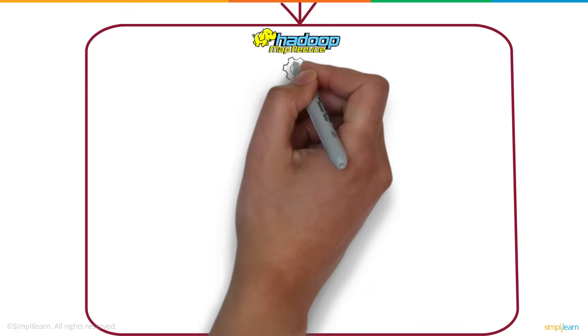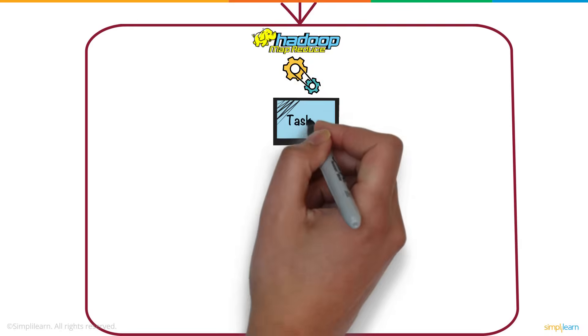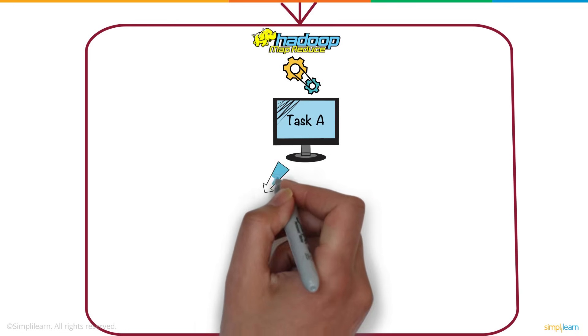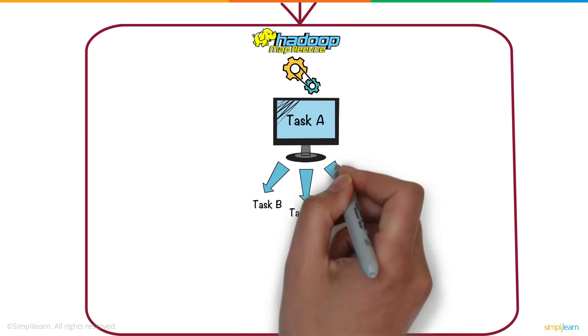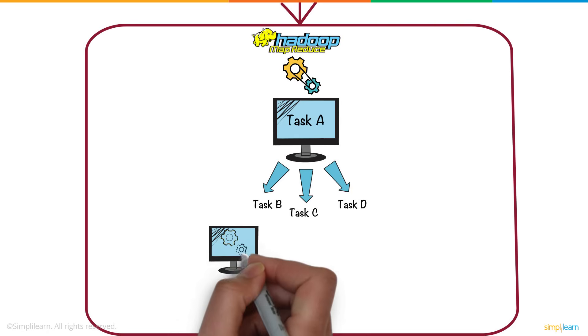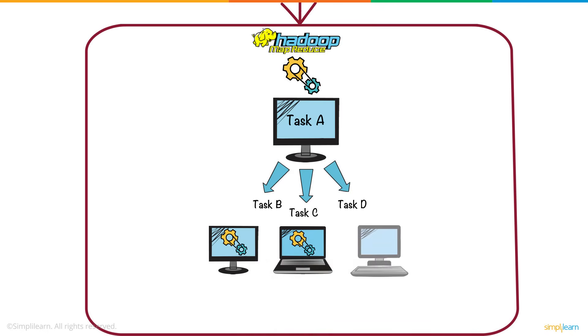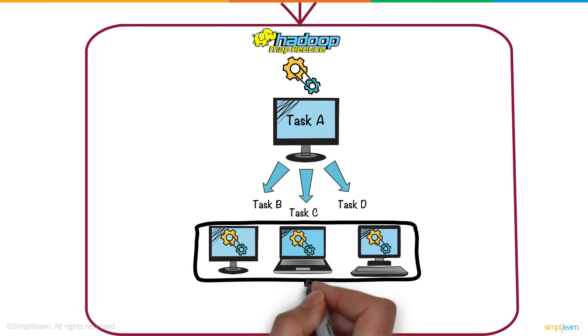MapReduce technique is used to process big data. A lengthy task A is broken into smaller tasks B, C, and D. Now, instead of one machine, three machines take up each task and complete it in a parallel fashion and assemble the results at the end.